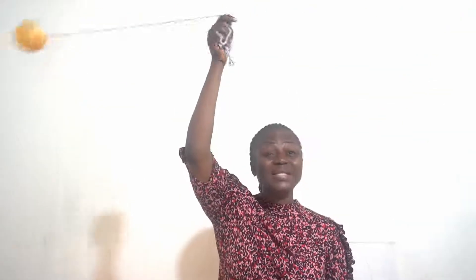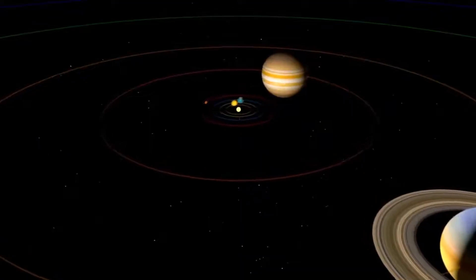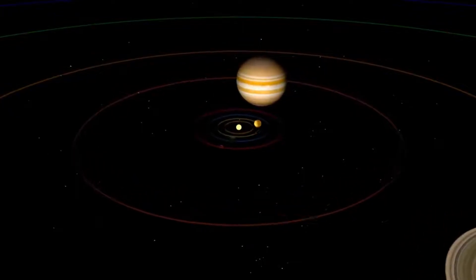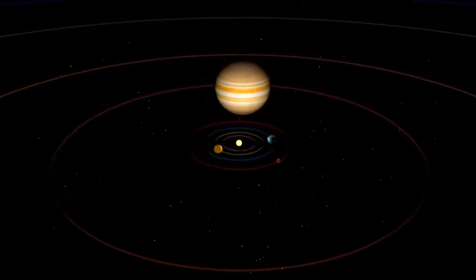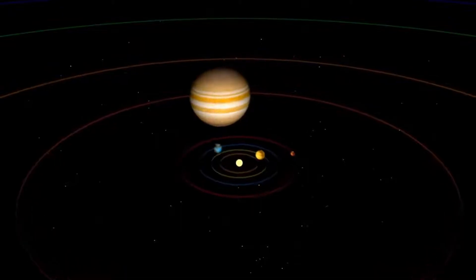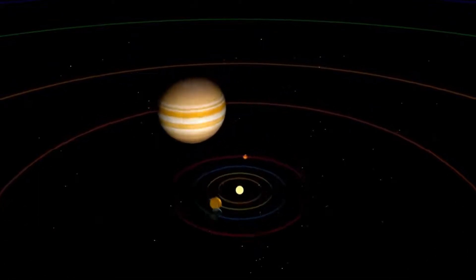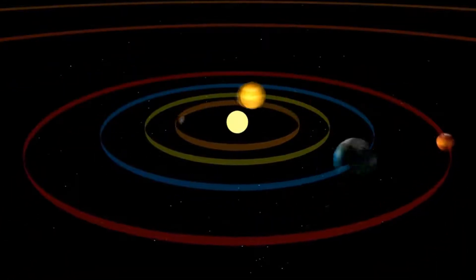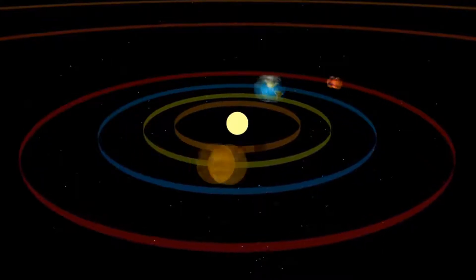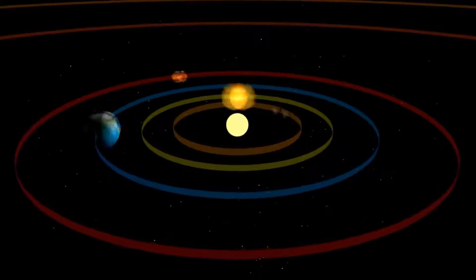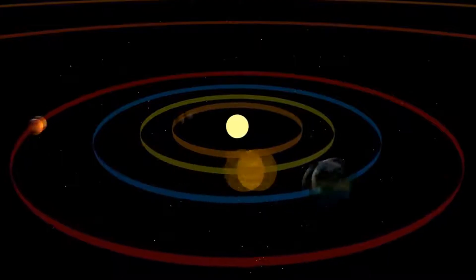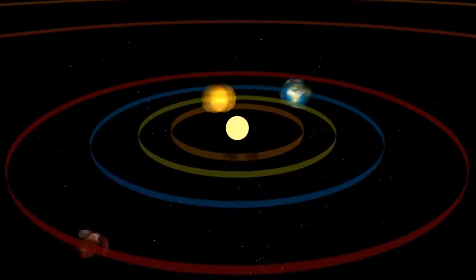The planets that are closest to the Sun move round faster than those that are far away from the Sun. The planets that are far away from the Sun move more slowly around the Sun. So the planets keep on moving round and round around the Sun. They never stop.